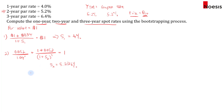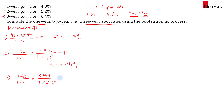For the three-year spot rate, we use the three-year par rate of 6.4%, where the YTM and coupon rate both equal 6.4% and the price equals par. The coupon is 0.064. We discount year one's coupon using the one-year spot rate of 4%, year two's coupon of 0.064 using the two-year spot rate of 5.2316% to the power of two, and in year three we have par plus coupon discounted by the three-year spot rate. Solving, the three-year spot rate equals 6.5066%.